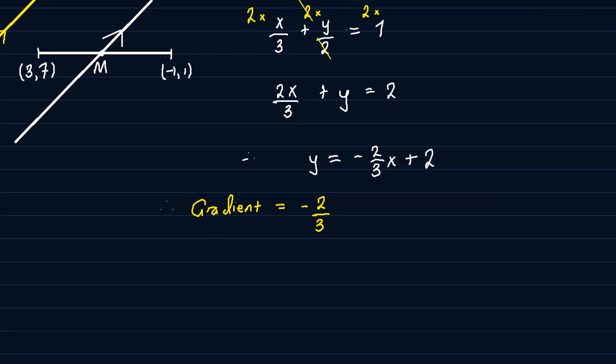Now that we have the gradient of the line, we now want to work out the midpoint of the line joining the two points. So we're looking now for the coordinates of M.